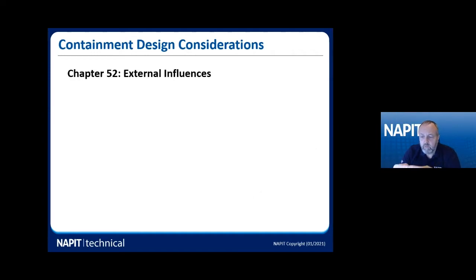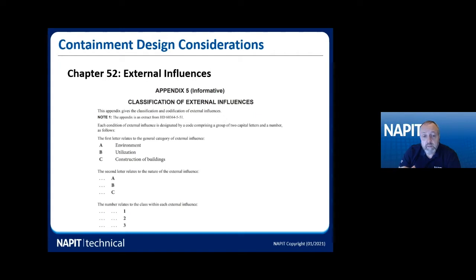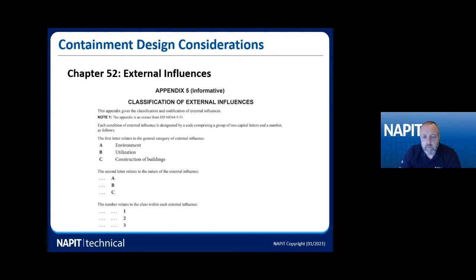We've also got to look at enclosure methods and protection against external influences. The conduit and trunking has to have a specific IP rating, or be capable of withstanding the particular external influence. When we look at external influences, we go to Appendix 5 of Chapter 52. Appendix 5 gives us all the different categories — you generally get two letters and a number, which is the IEE wiring regulations external influence categorisation. The first letter gives you the environment or utilisation, the second gives you the external influence — so 'A' is temperature, 'D' is water, and so on — and the number pertains to a particular requirement.